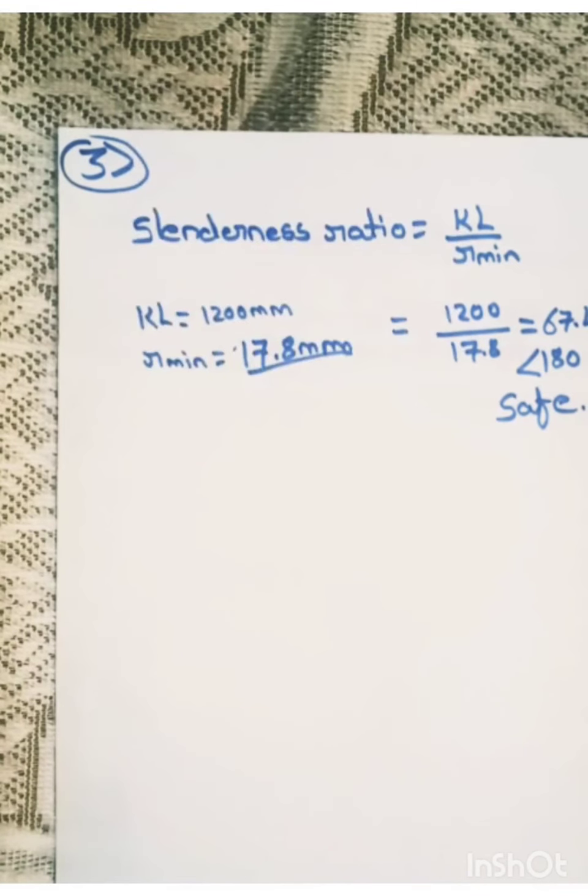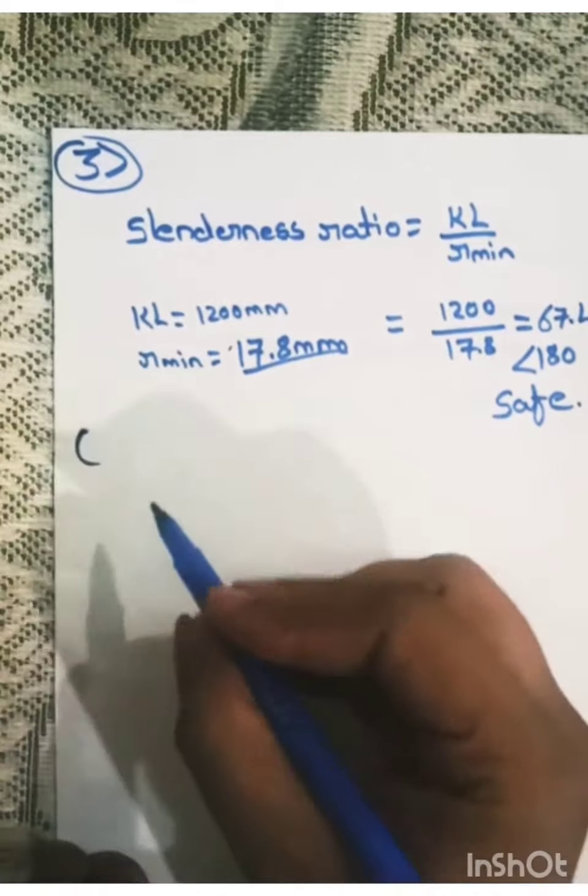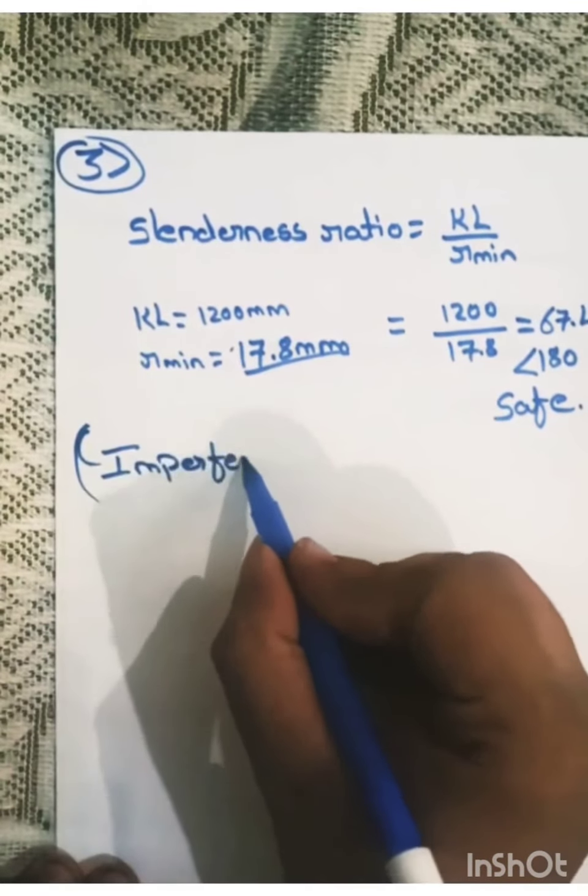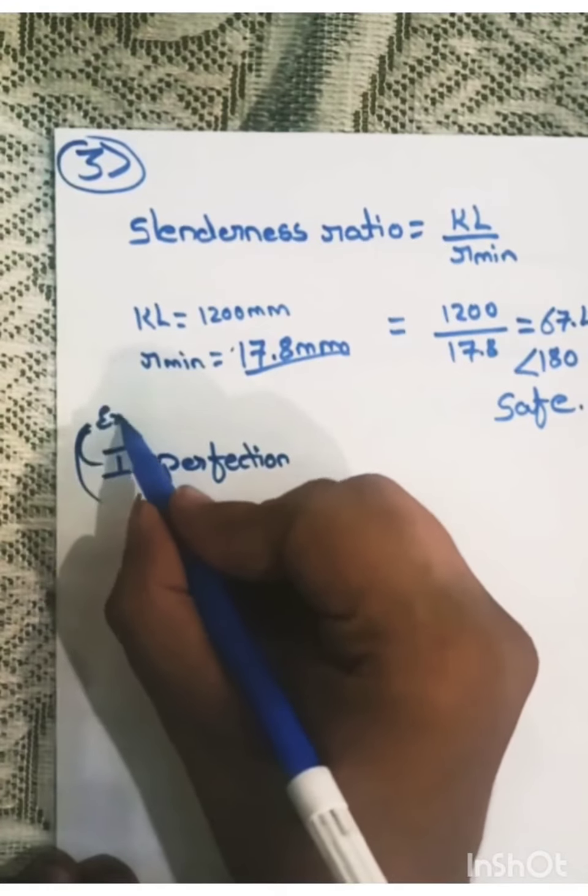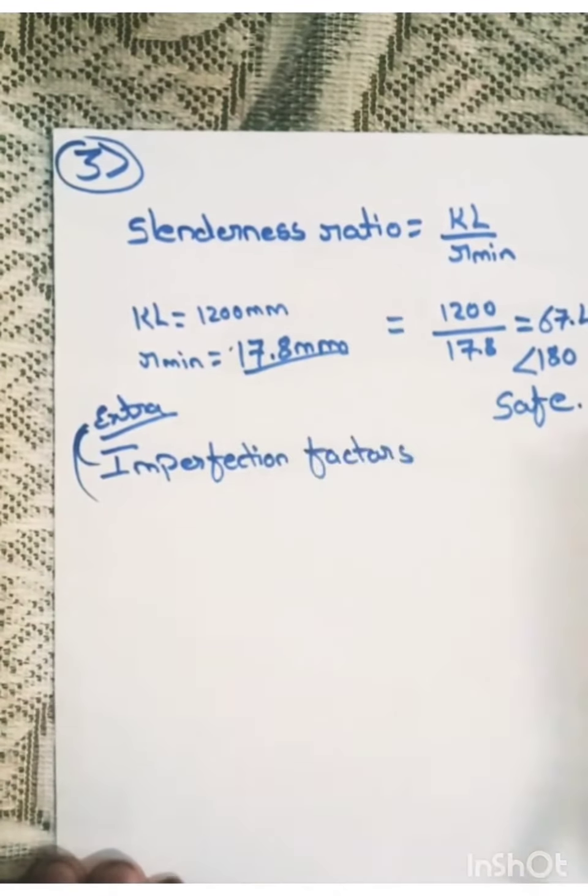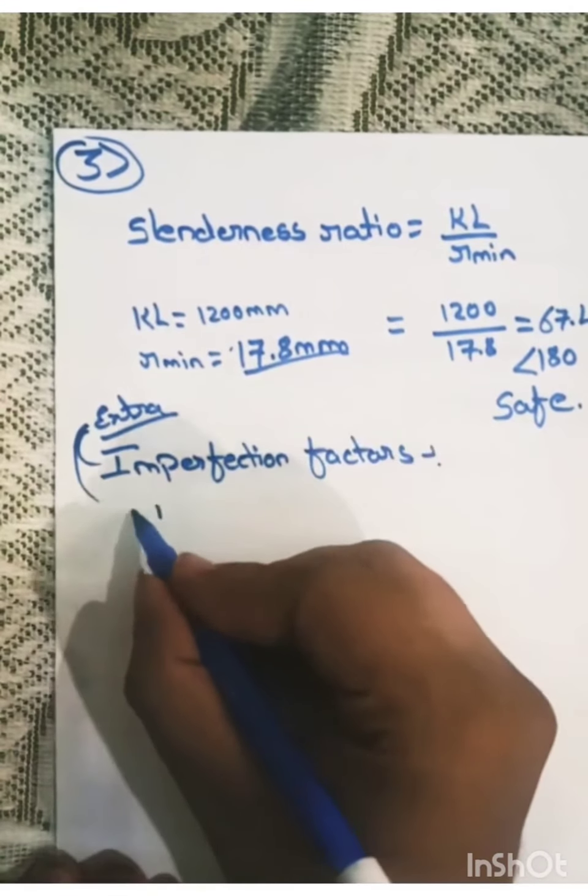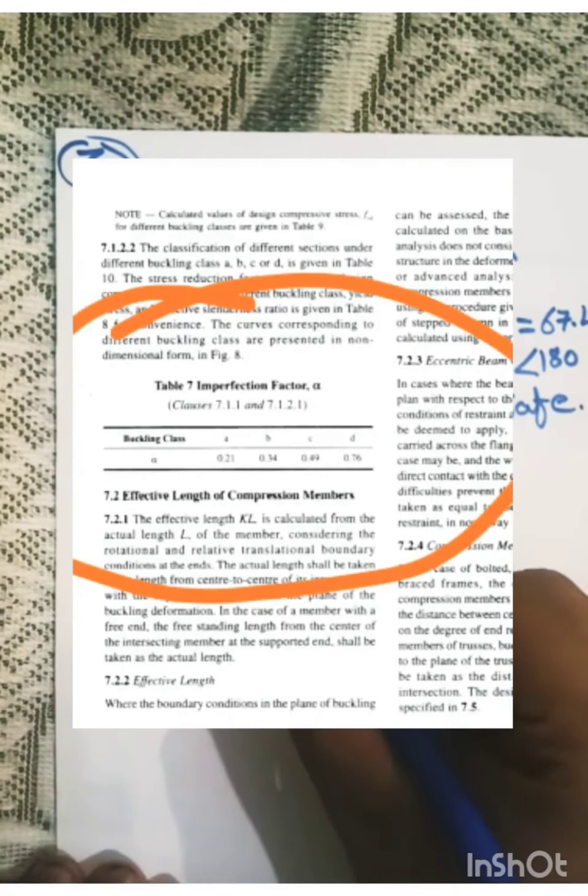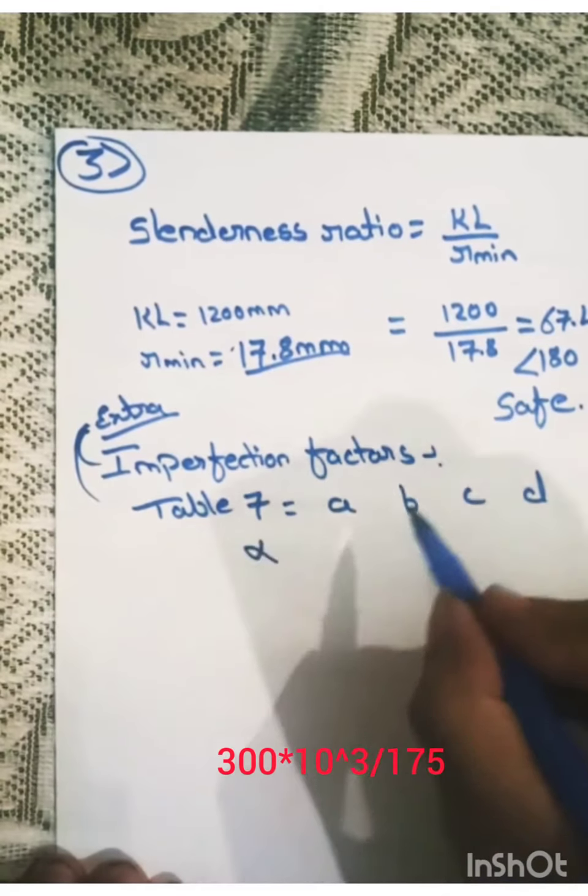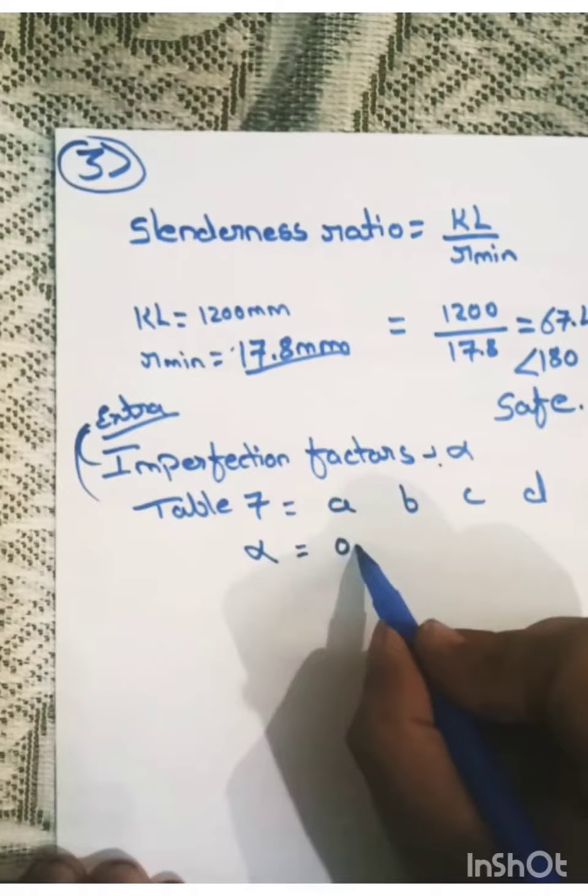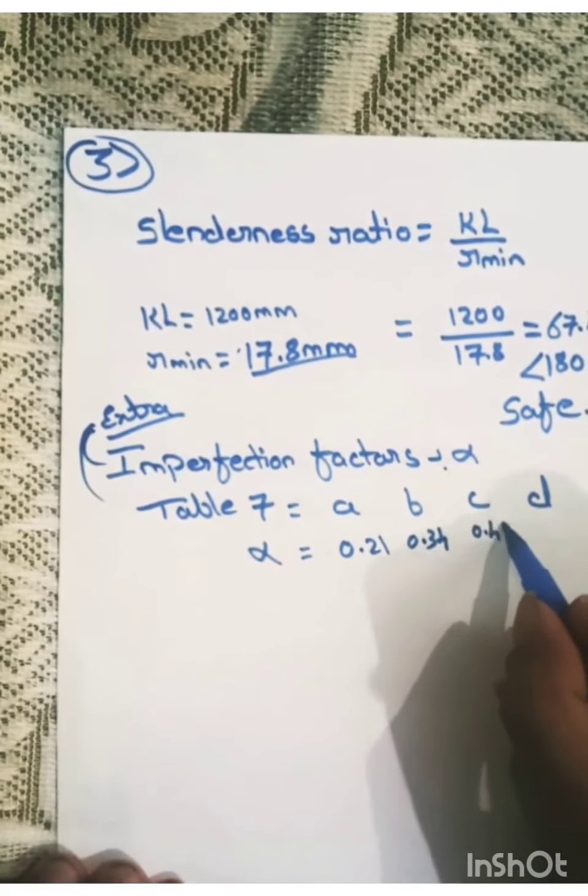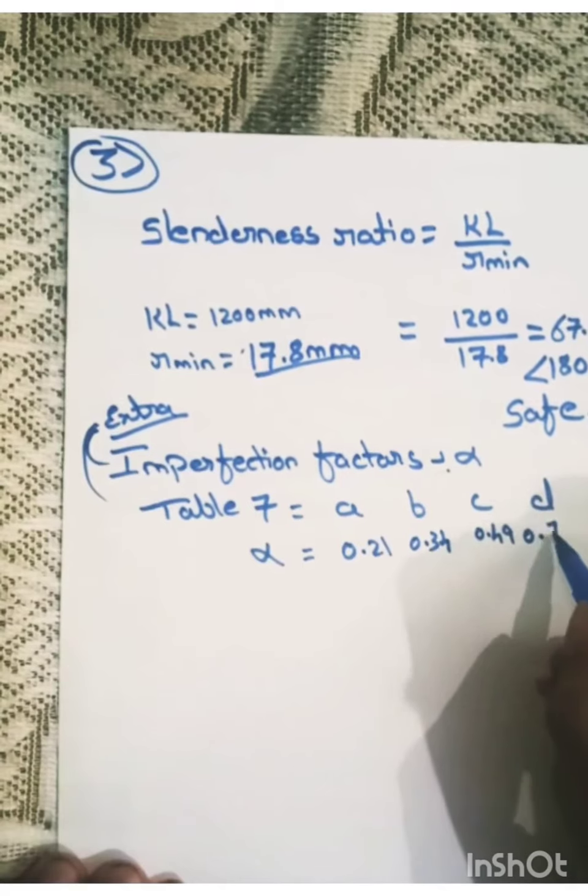In order to use table number 9, these tables ABCD refers to imperfection factors. So imperfection factors are given in table number 7. For A, B, C and D, its values are the value of alpha. It is also called as alpha. It is given as 0.21, 0.34, 0.49 and 0.76.